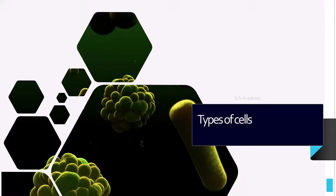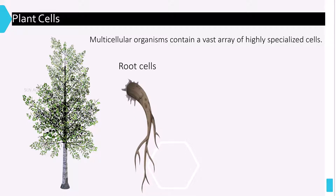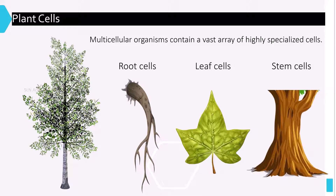Multicellular organisms contain a vast array of highly specialized cells. Plants contain root cells, leaf cells, and stem cells, each with a different functionality. Some cells absorb water and minerals from soil, some prepare their food, and some are helpful in transferring water and minerals throughout the plant.